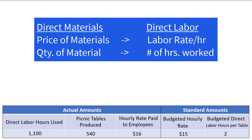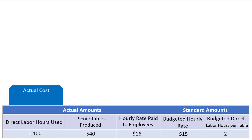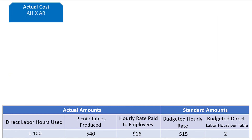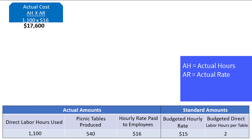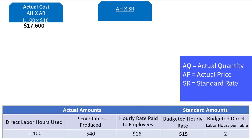Instead of a price per unit of material, we have an hourly rate. Instead of a quantity of materials used, we have the number of direct labor hours worked. The actual cost of direct labor can be found by taking the actual hours (AH) times the actual rate (AR). We have 1,100 actual hours times the $16 actual rate per hour, which equals $17,600. The next thing we want to calculate is the actual hours (AH) times the standard rate (SR): 1,100 hours times $15 per hour gives us $16,500.